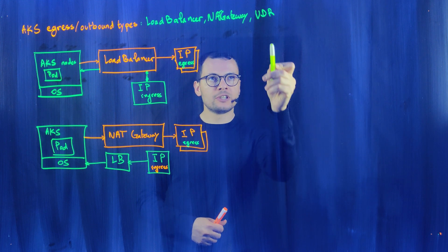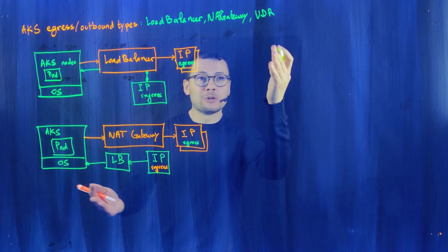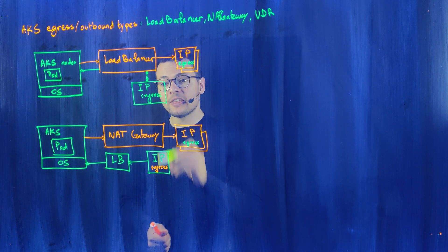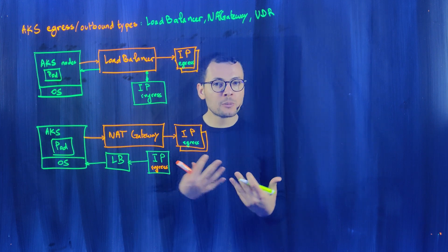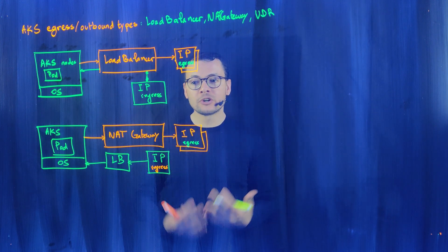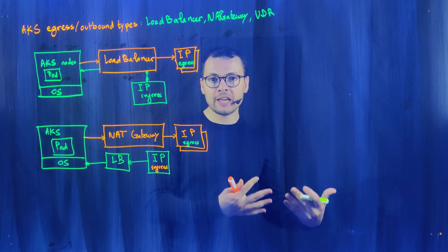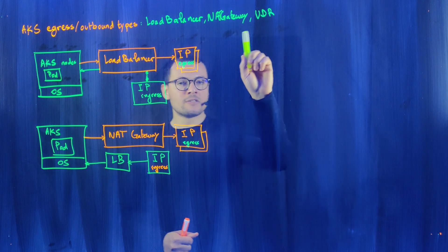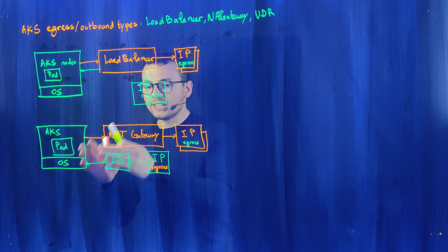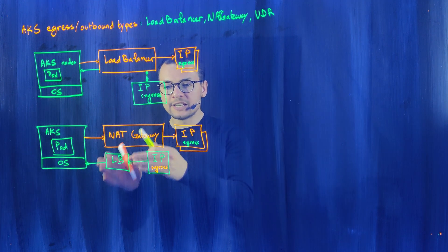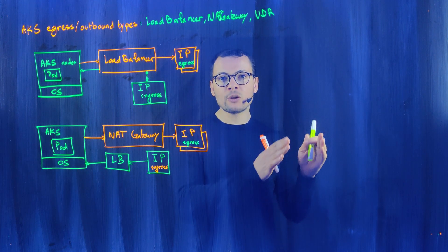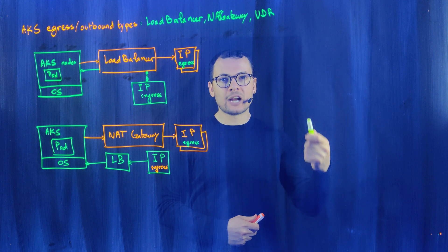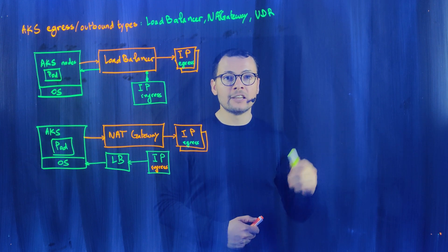Now let's look at the third mode: UDR, or user-defined routing. The reason for this mode is that the load balancer and NAT gateway, while functional, don't allow enterprises to filter egress traffic using a network virtual appliance like Azure Firewall. So the UDR mode forces all egress traffic to be routed through an Azure Firewall via a route table, where enterprises can filter, control, and log that traffic.